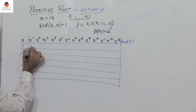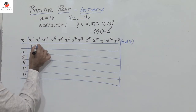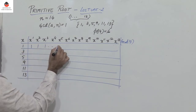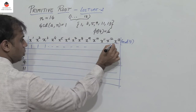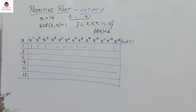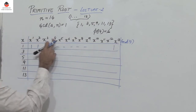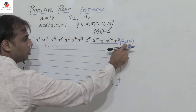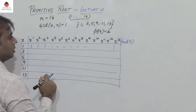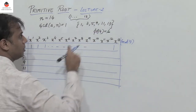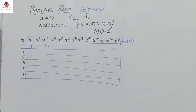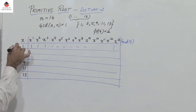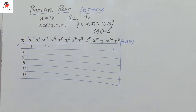Now 1 power 1 is 1, 1 squared is 1, 1 cubed is 1 — all the values are 1. So when I raise 1 to powers 1 through 13 in mod 14, I will not generate all the numbers which are relatively prime to 14. So definitely 1 is not a primitive root of 14.